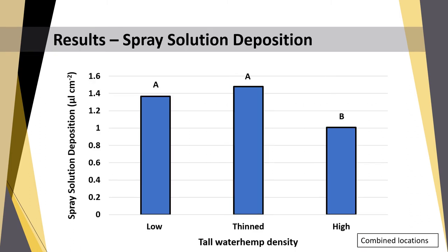This first graph shows the results for spray solution deposition. On the x-axis we have the three different densities; on the y-axis we have spray solution deposition in microliters per centimeter squared. Tall waterhemp density was the only significant factor. The amount of spray solution deposited on plants growing in low density and thinned density was similar and greater than that deposited on plants growing in high density. This can be attributed to the overlapping and foliage interference that prevented the spray solution from reaching target weeds — remembering that we accounted for the difference in leaf area.